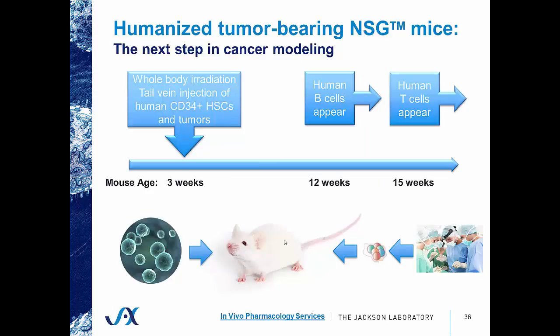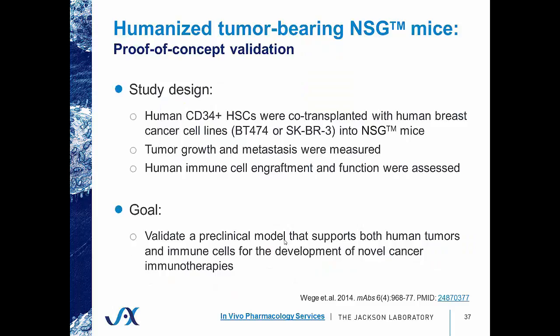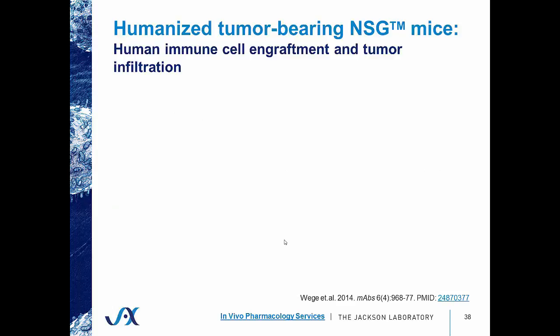What happens if you marry the two together — take a PDX model, engraft a patient tumor, but also engraft human immune cells into the same mouse? That is the next step in cancer modeling, and we are calling those our humanized tumor-bearing NSG mice. As a proof of concept, investigators published a paper in Monoclonal Antibodies in which they co-transplanted human CD34-positive hematopoietic stem cells with human breast cancer cell lines into NSG mice, measuring tumor growth, metastasis, and human immune cell engraftment and function, with the goal of validating a preclinical model that supports both human tumors and immune cells for the development of novel cancer immunotherapies.